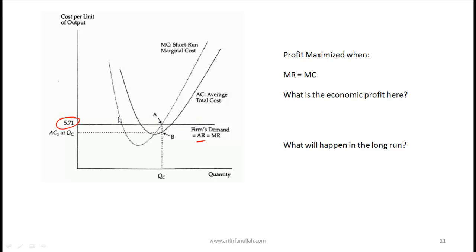This curve here is the marginal cost curve, which tells us the cost of producing one additional unit. Profit is maximized when marginal revenue equals marginal cost. So the appropriate quantity to produce is QC, which corresponds to point A where the marginal cost curve and the marginal revenue curve intersect.